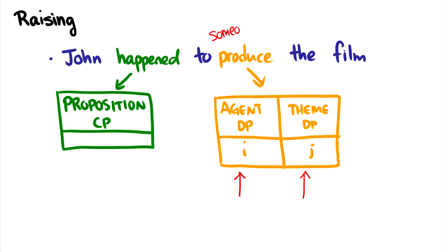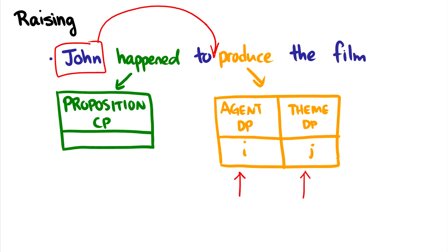If we remember our VP-internal subject hypothesis, we have to have someone right before 'produce' in order to get a theta role from 'produce' — to be the agent. In the sentence 'John happened to produce the film,' who is the person producing the film? It's John. But the question is, how was he there when there's another main verb 'happened' in the way?